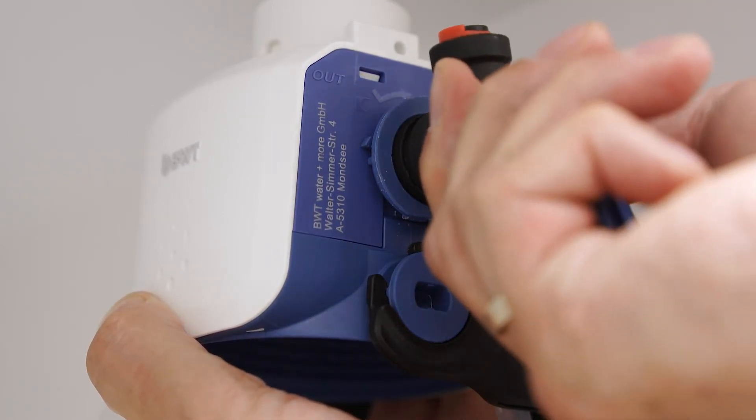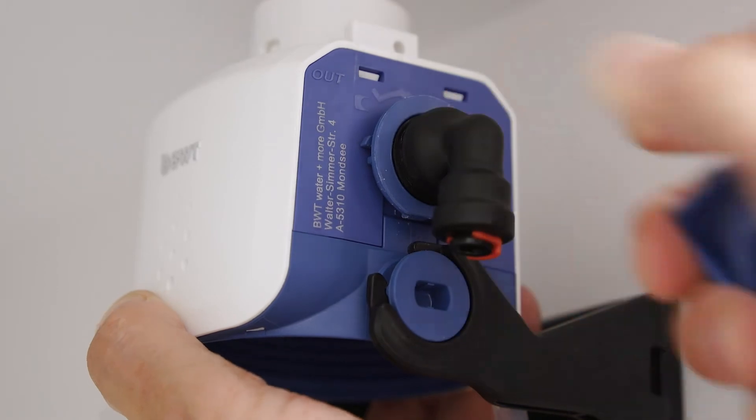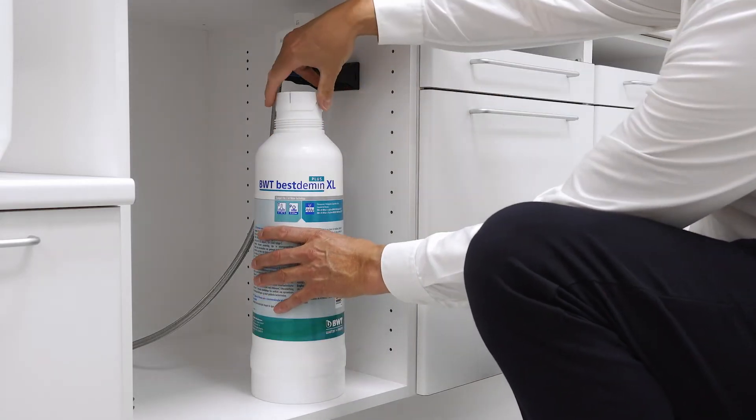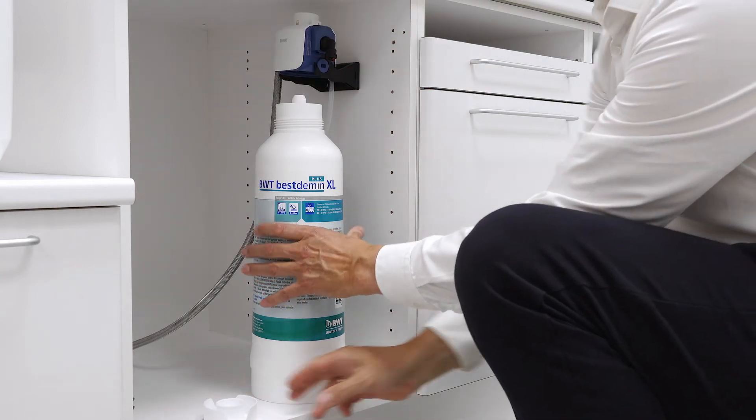The direction of the elbow can be adjusted as you wish. Before inserting the BestSteam filter, remove the dust cap and screw the filter into the filter head.